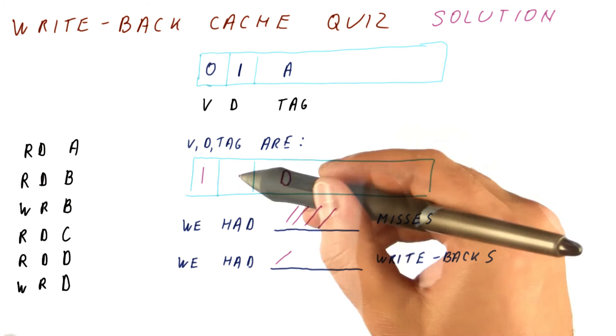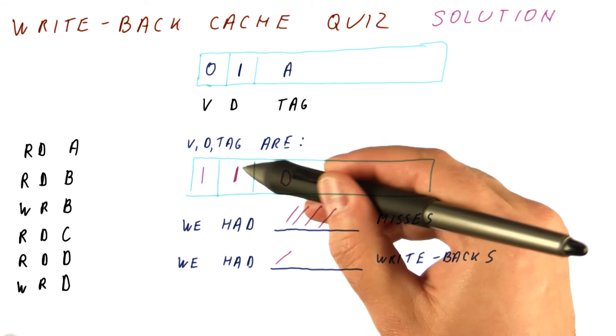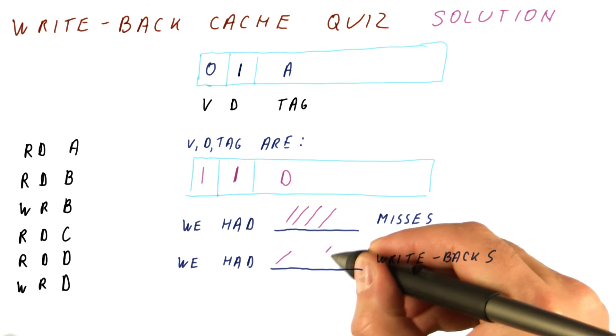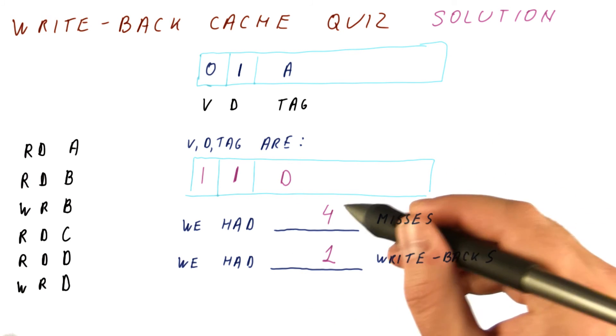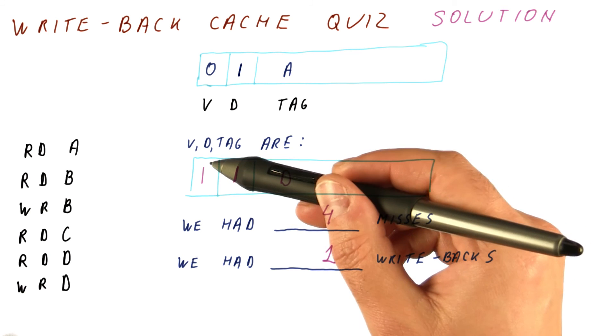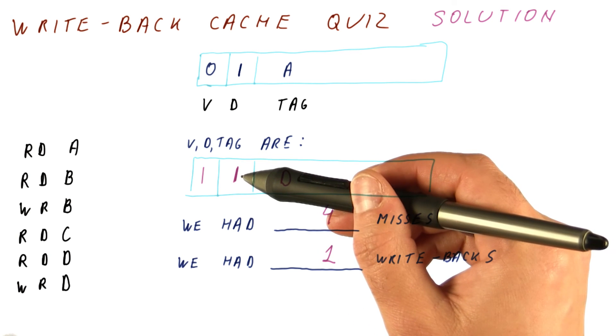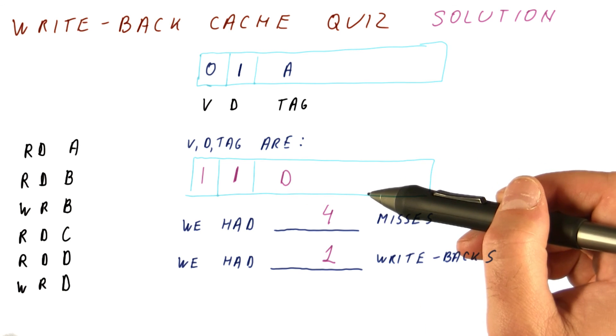We have a write to D. It's a hit, but the dirty bit changes to one. Overall, we had one write-back and four misses. The final cache state has the valid bit set to one, the dirty bit set to one, and the tag corresponding to D.